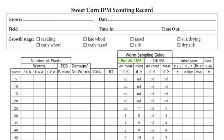This scouting form is designed to be used for pre-silked corn, where the threshold will be 15%, or silking corn, where the threshold drops to 5%. You will systematically walk through the field scouting for European corn borer, fall armyworm, and corn earworm larvae. You will also look for egg masses and check the plant for any signs of damage.